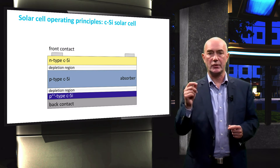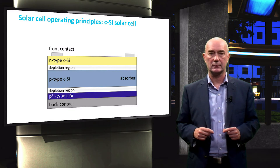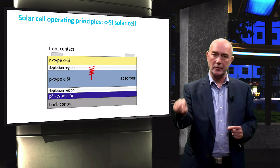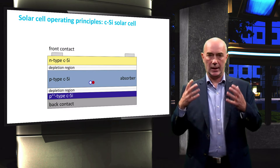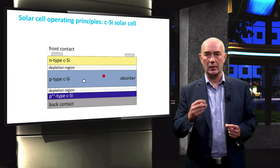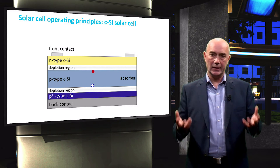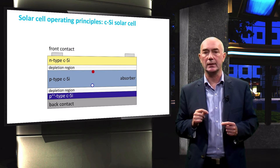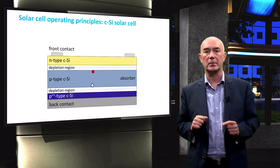For now, let's just see how this structure will allow us to separate charge carriers. When the solar cell is illuminated, the light penetrates into the solar cell and is absorbed in the absorber layer. An electron-hole pair is generated and the electron and hole will move randomly. When an electron comes to the edge of the depletion region between the N-type and P-type crystalline silicon, it will feel an electric force that is present in the depletion region.